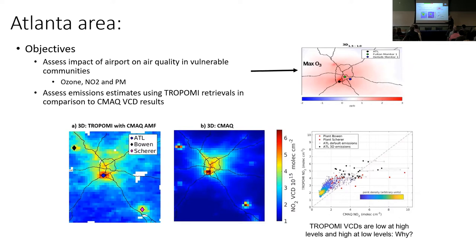The other thing that really stands out is the Atlanta airport right there. This really struck the Georgia EPD, our local management agency, who brought it to our attention — just how striking this was and how important it might be to an agency. The airport was really lighting up. So we used both modeling and the TROPOMI retrievals to look at the impact of the airport on air quality.